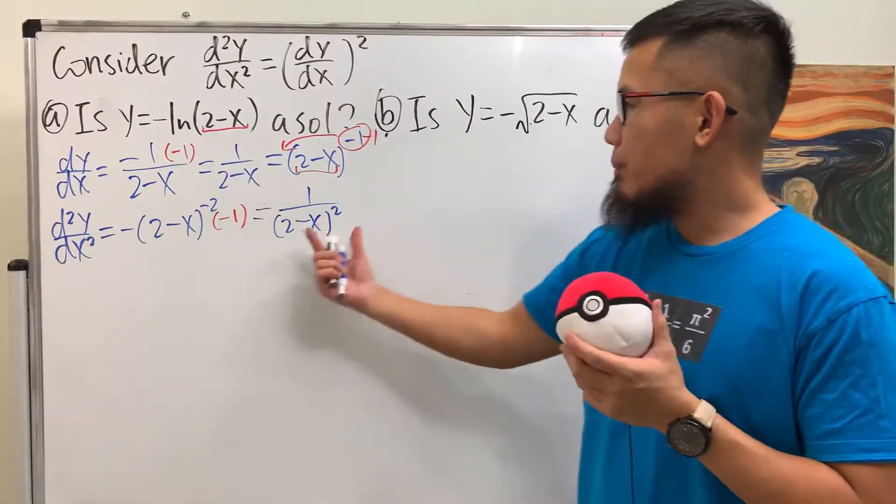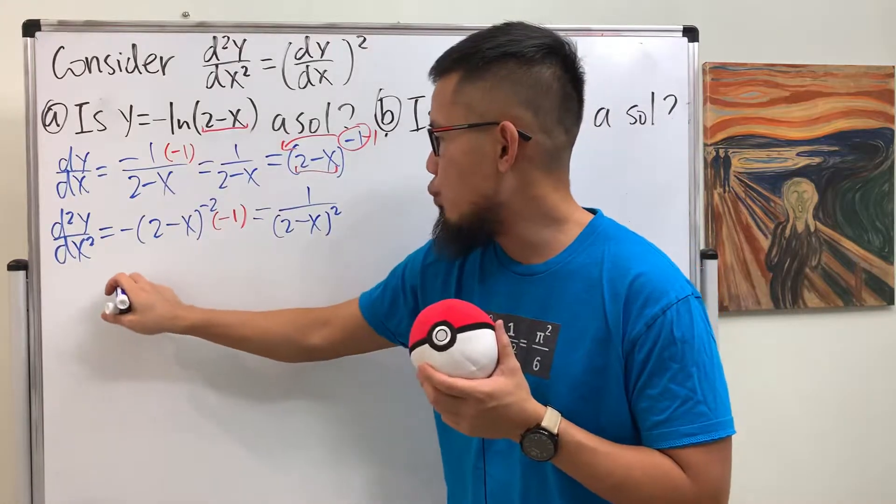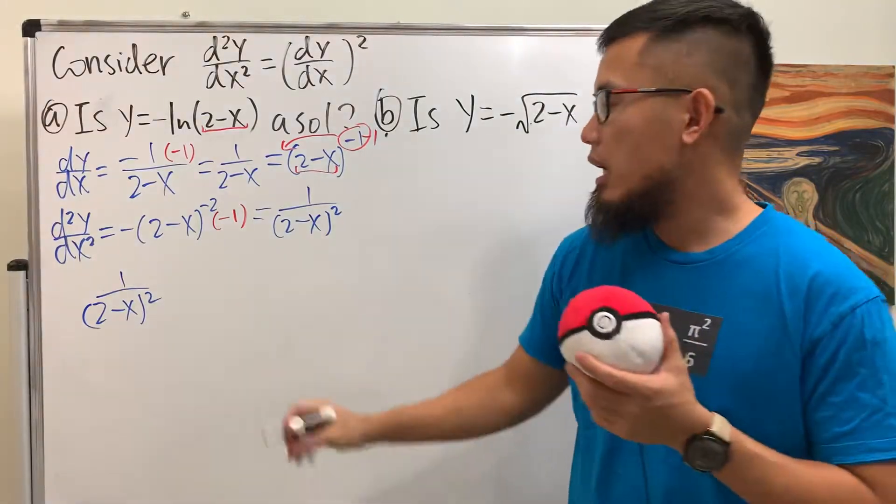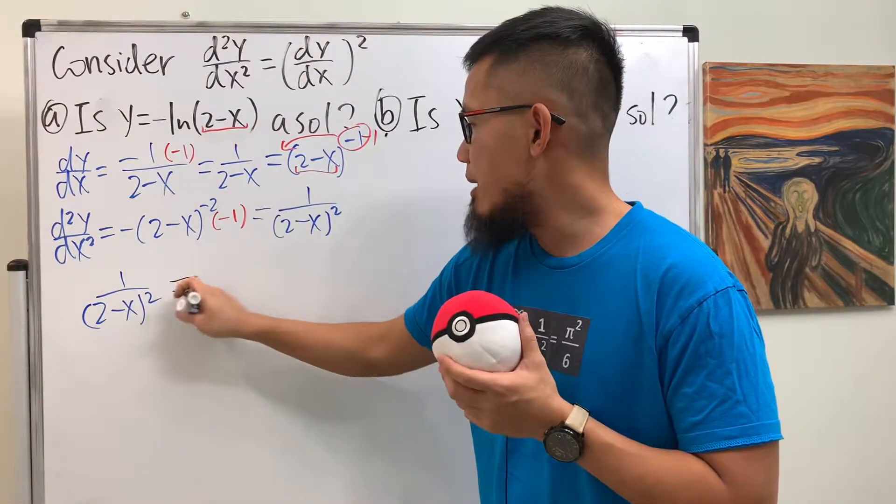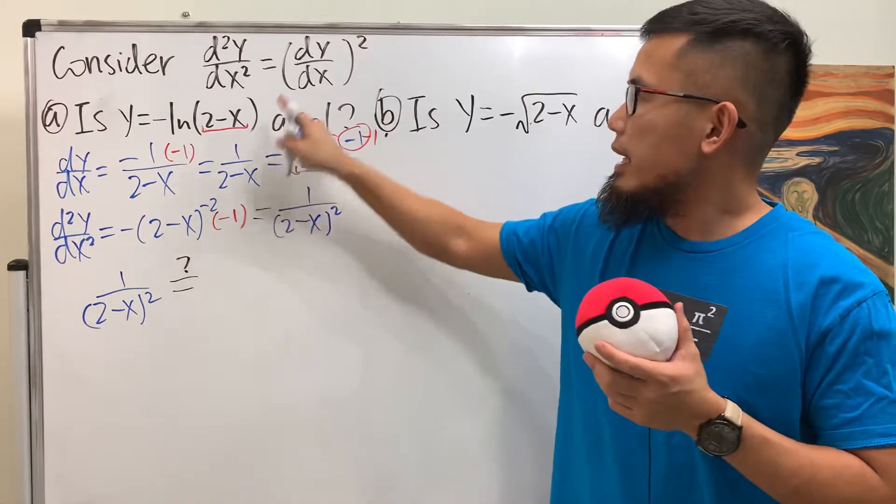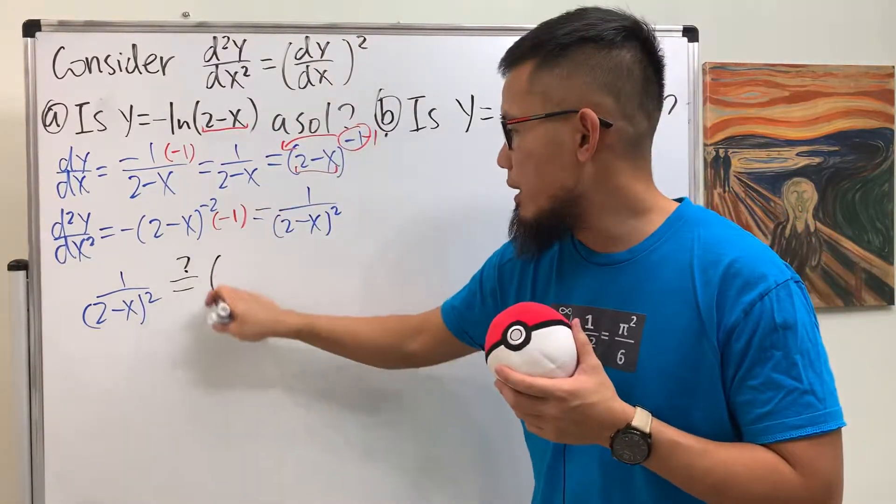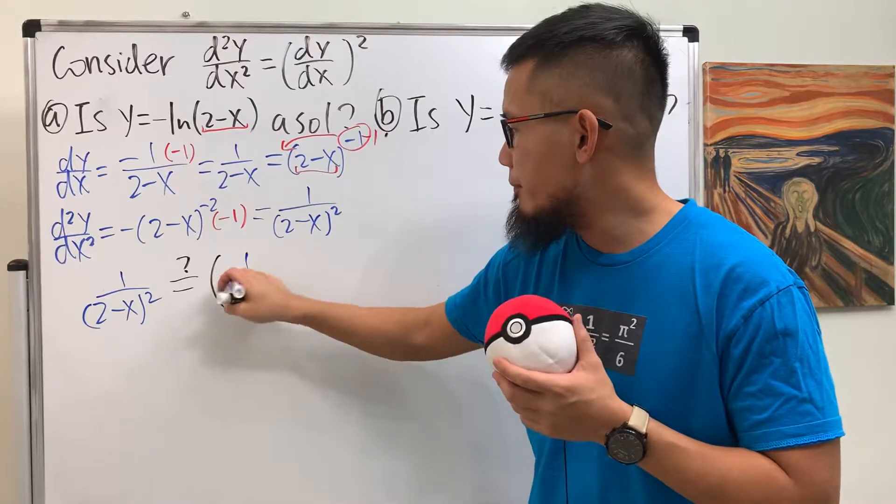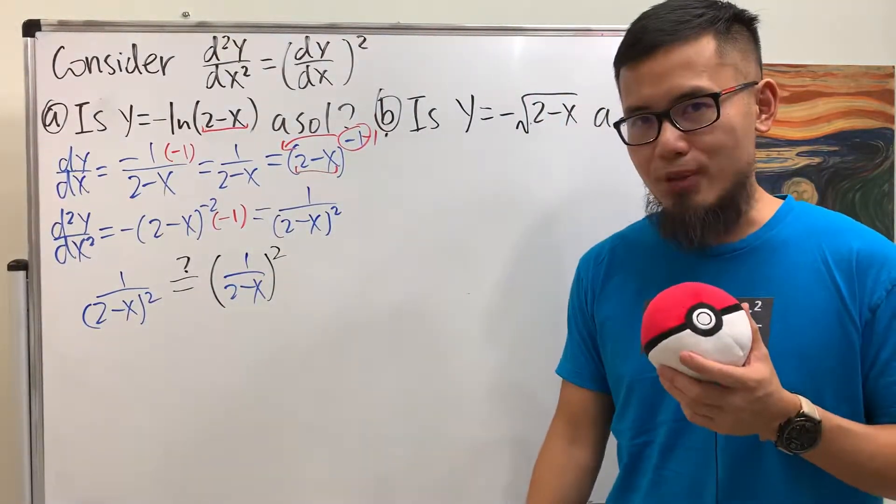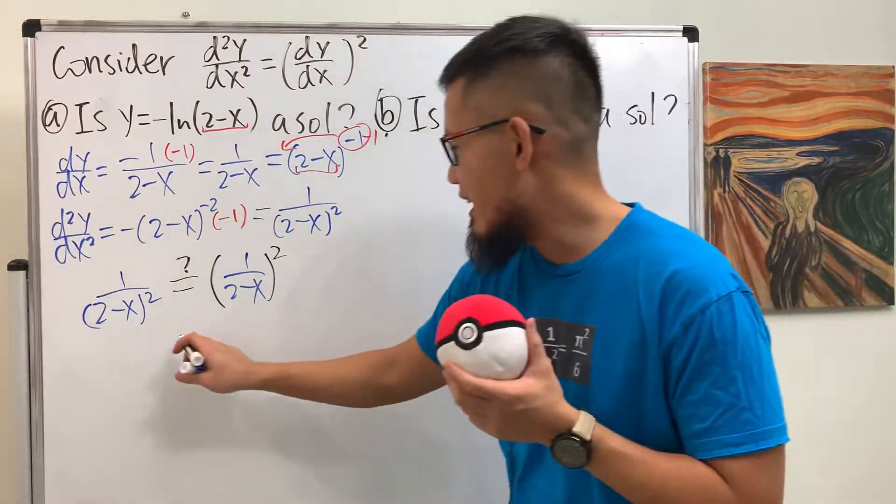Alright, now, put this right here. So we have 1/(2-x). In the parentheses, square that. But is this the same as we put the first derivative in here and square? So open the parentheses with this inside, and then we square. Are they the same? Definitely. In this case, right?